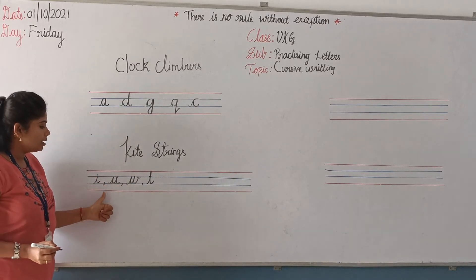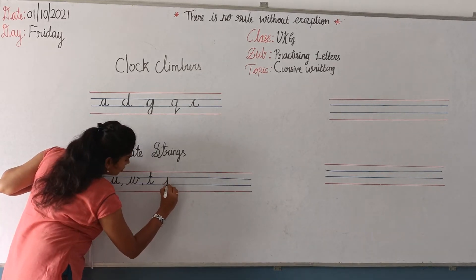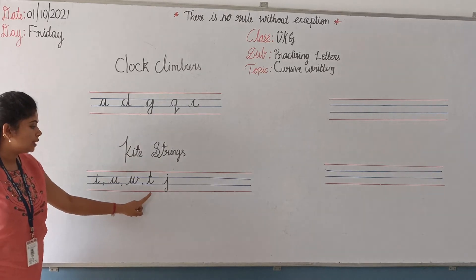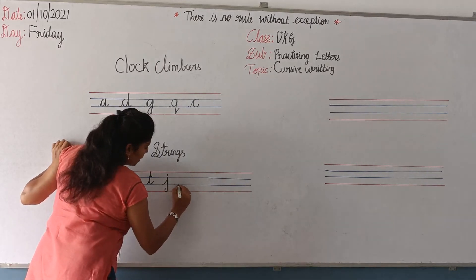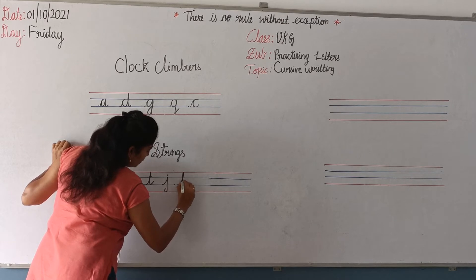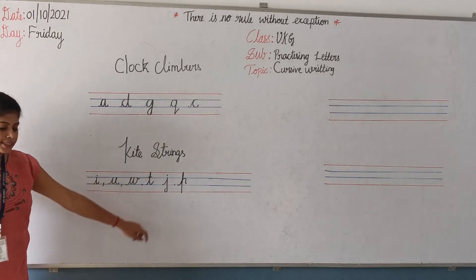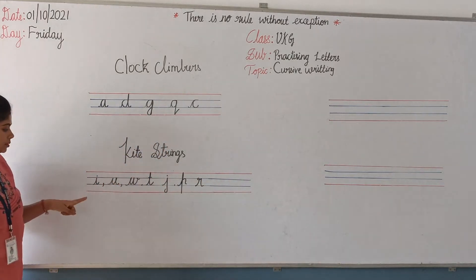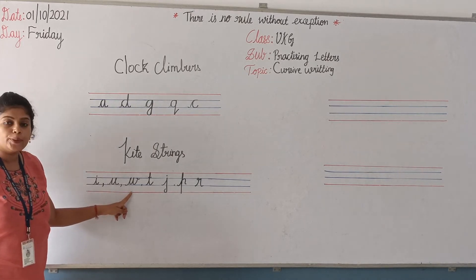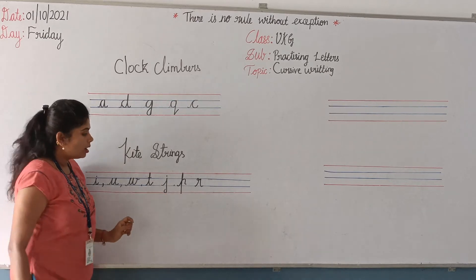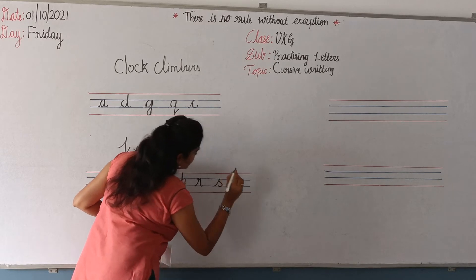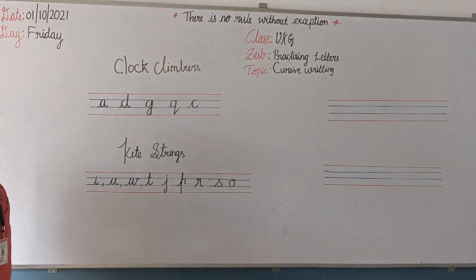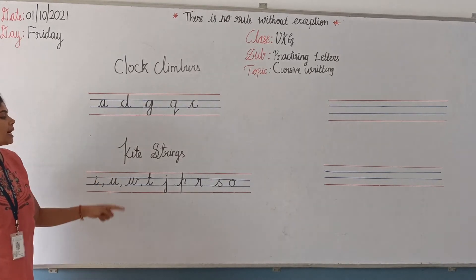The kite strings group includes the letters: I, U, W, T, J, P, and R. Go up, come down — these are the movements for these letters. P is a descending letter. The letters I, U, W, T, J, P, R, and O — these letters are called the kite strings group.